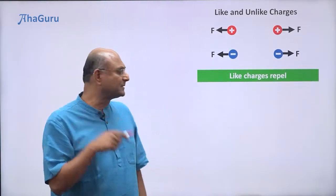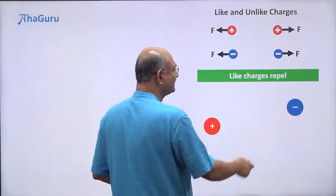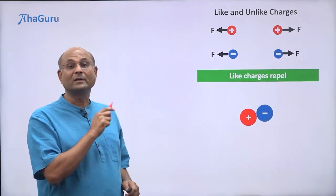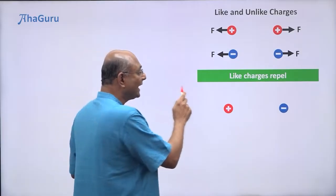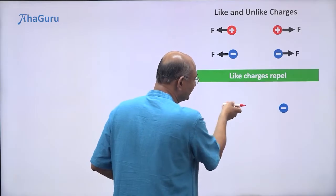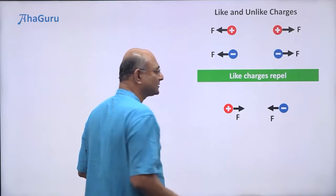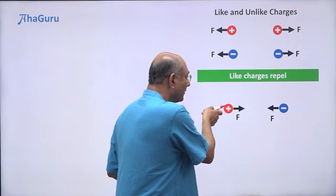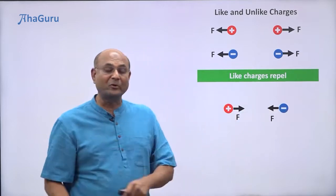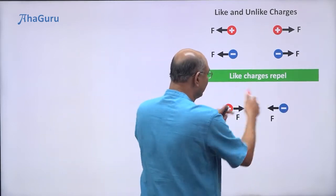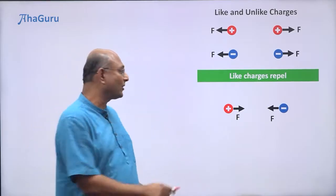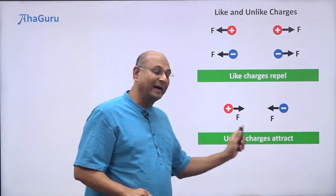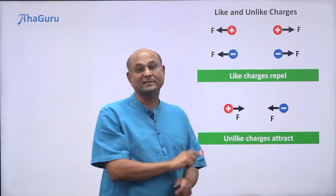What if I have a positive charge and a negative charge? They will come close to each other — positive and negative attract each other. So one will feel a force this way and the other will feel a force the other way. Equal magnitude force and opposite direction — that comes from Newton's third law. But the attractive nature is something that comes from the nature of electric forces. So unlike charges attract, like charges repel.